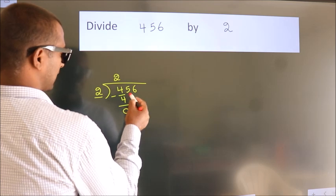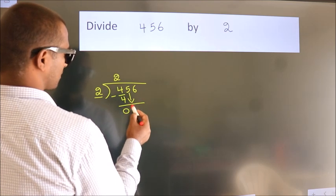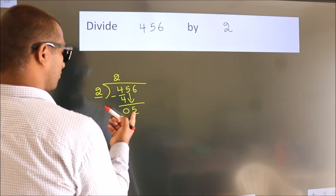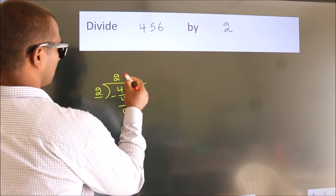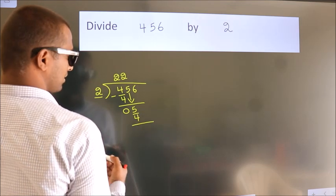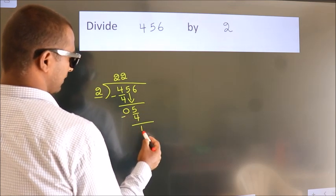After this, bring down the beside number. So 5 down. A number close to 5 in 2 table is 2 2's, 4. Now we subtract. We get 1.